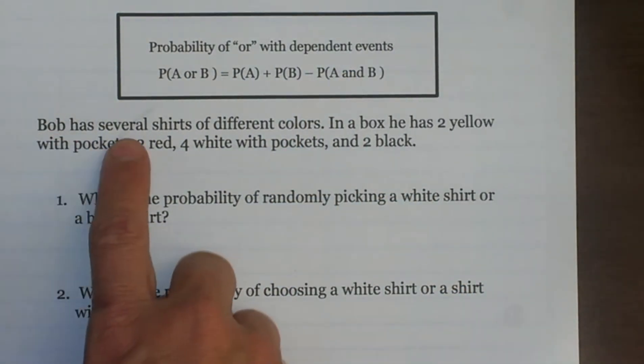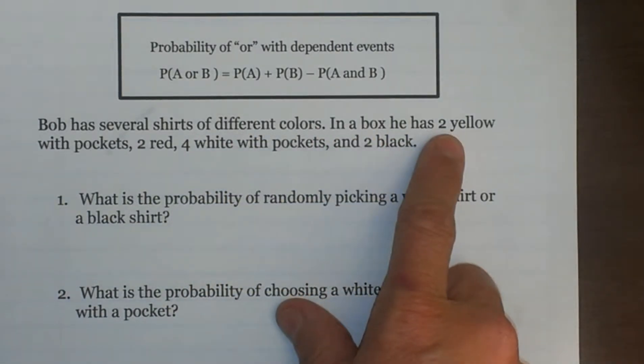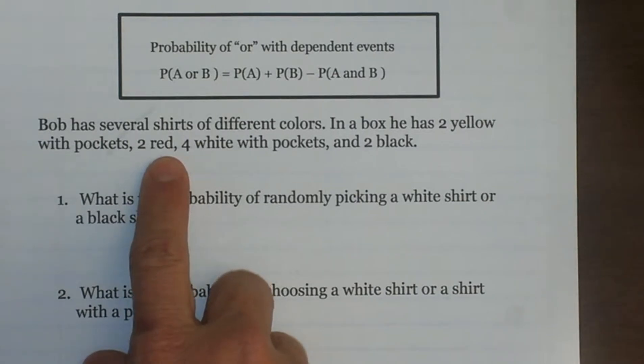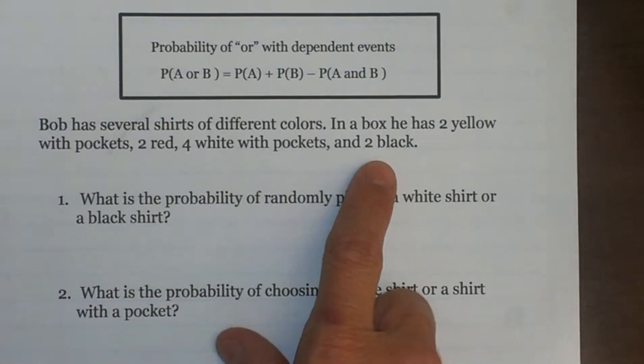Bob has several shirts of different colors. In a box he has two yellow with pockets, two red (that means without pockets), four white shirts with pockets, and two plain black shirts.